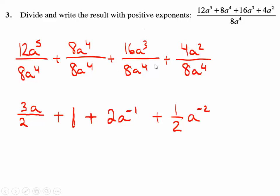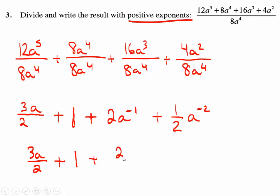We have to express all the results with positive exponents, so we have to change the terms with negative exponents. The first and second terms stay the same. But the third term — that negative 1 in the exponent — means we keep the 2 on top, and a to the negative 1 moves back to the denominator as just a, with an exponent of 1. Same thing happens with a to the negative 2 — that piece moves into the denominator as a squared.